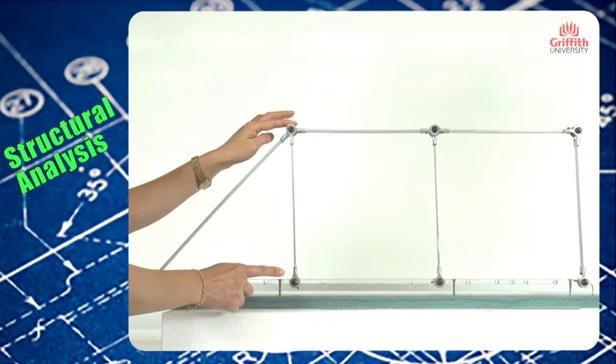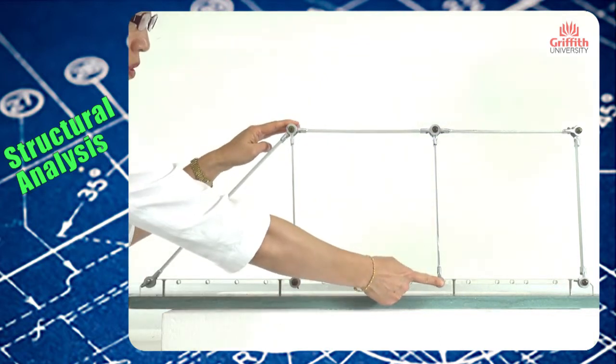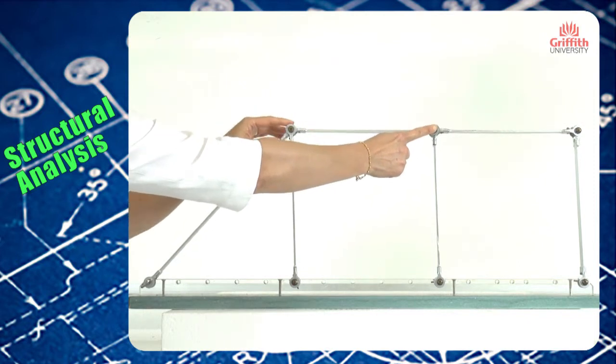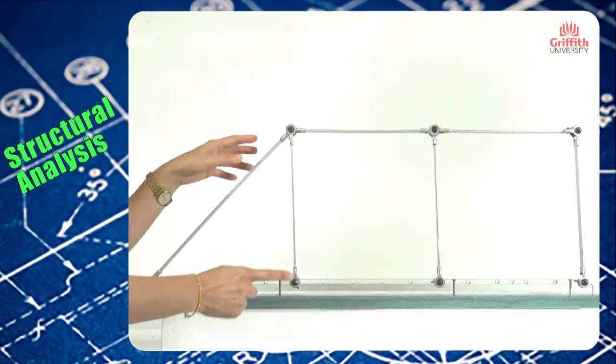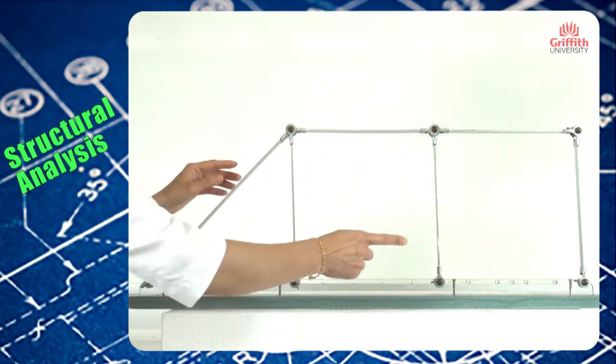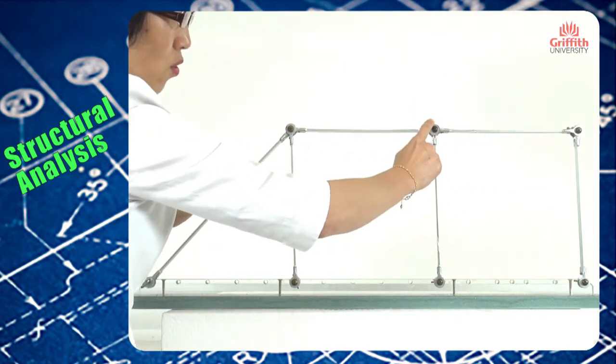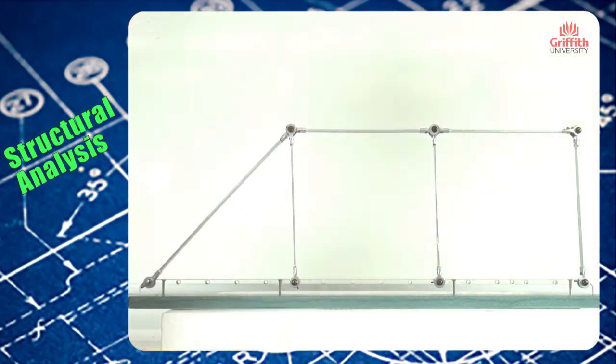Now with this stable joint and this stable joint through two members, the third joint will be stable. By the same token, the last joint will be stable through the other two stable joints, so the system is a stable truss.